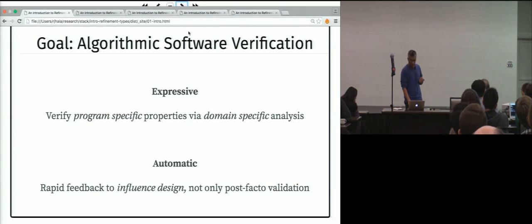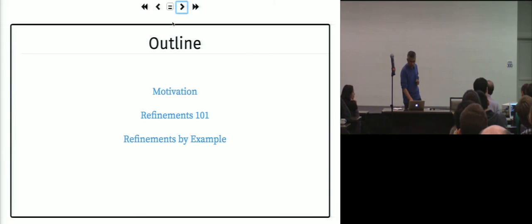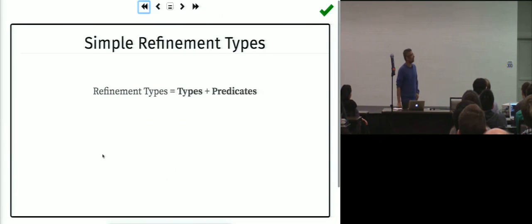So the goal of refinement types is to find a way where you can have the programmer specify program-specific assertions and invariants that would rule out these kinds of things, but yet have them be checked in a very effective and automatic manner, without having to write down a lot of proofs.